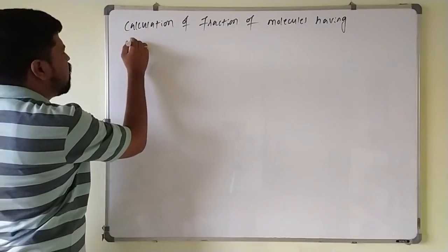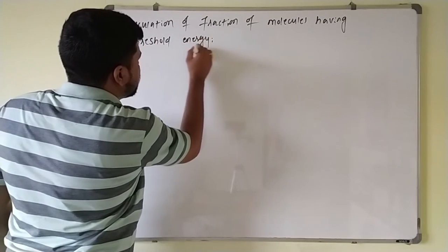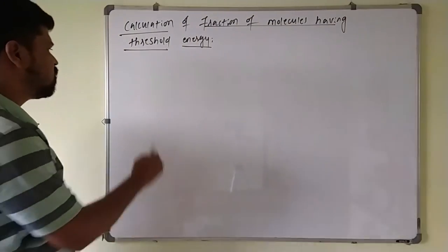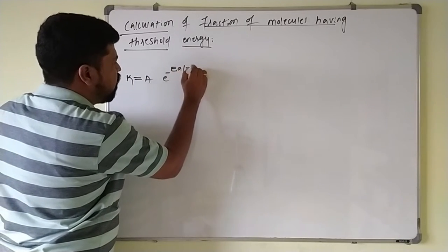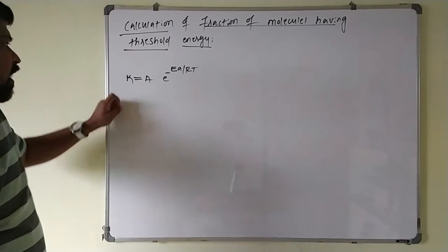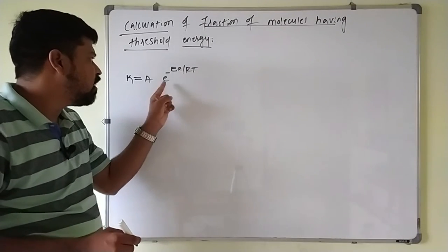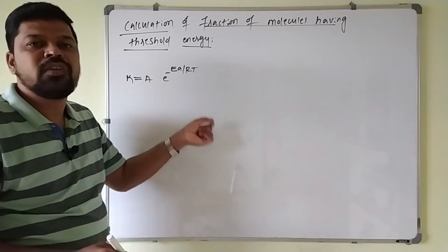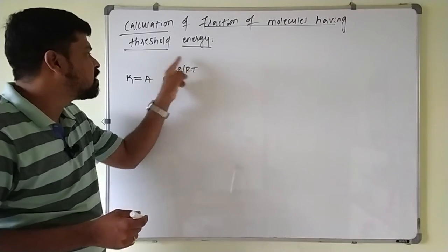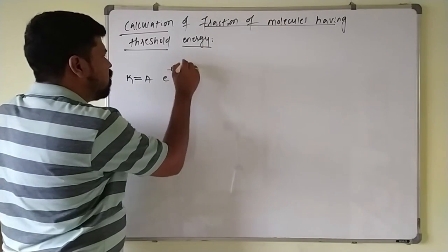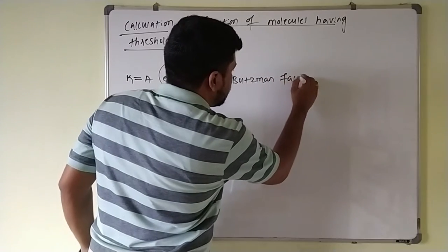Threshold energy is the energy required to form the product upon collision. This can be calculated using the Arrhenius equation: K = A × e raised to minus Ea divided by RT. A is the Arrhenius frequency factor indicating collision frequency between reacting molecules. The term e raised to minus Ea by RT indicates the fraction of molecules having sufficient kinetic energy to form a product upon collision — this is also called the Boltzmann factor.